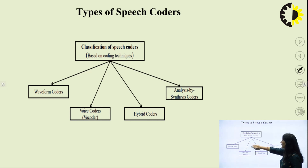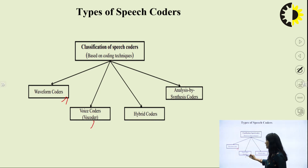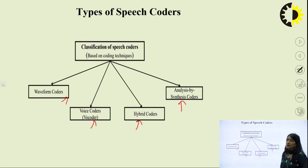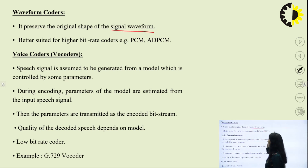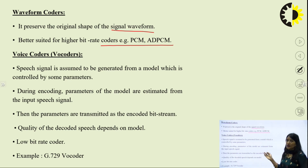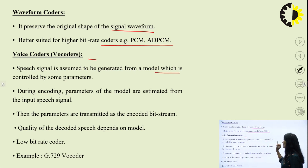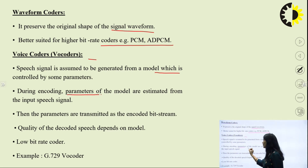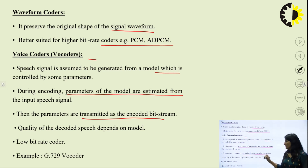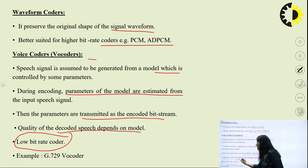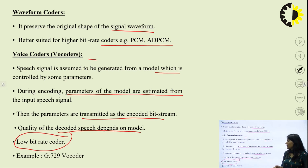There are types of speech coders: waveform coder, voice coder, hybrid coder, and analysis-by-synthesis coders. Waveform coders preserve the original shape of the signal waveform, better suited for higher bitrate coding — for example, PCM or ADPCM. Voice coders are vocoders: the speech signal is assumed to be generated from a model controlled by some parameters. During encoding, parameters of the model are estimated from the input speech signal, then transmitted as encoded bitstream. At the receiver, synthesis is performed. It is a low bitrate coder. One example is the G729 vocoder.